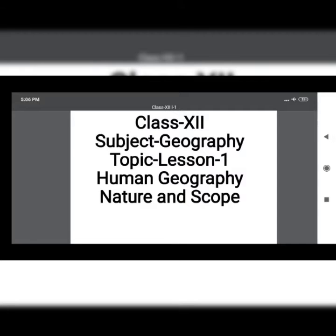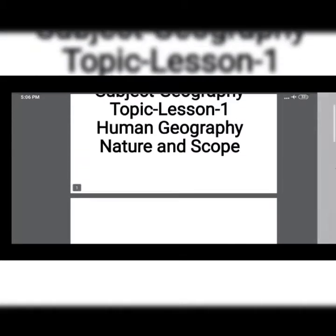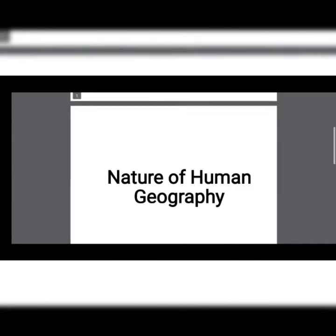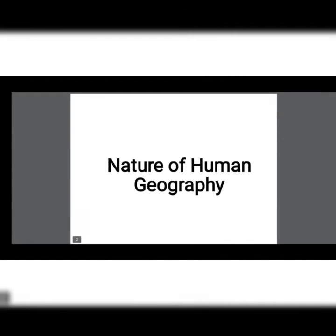The nature of human geography: human geography studies the interrelationship between the physical environment and the socio-cultural environment created by human beings through mutual interaction. The elements include landforms, soil, climate, water, nature, vegetation, and the diverse flora and fauna.